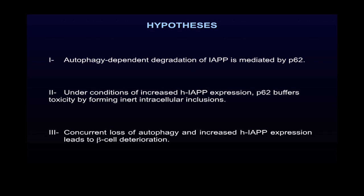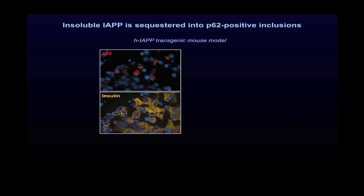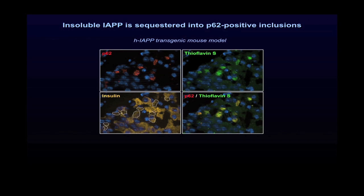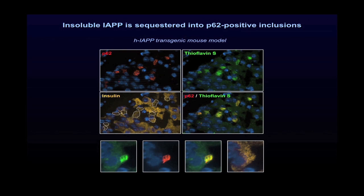We then investigated the role of P62 under increased expression of human IAPP and hypothesized that P62 buffers toxicity by forming inert intracellular inclusions. We previously reported that beta cells of human IAPP transgenic mice contain large cytoplasmic P62-positive inclusions, stained here in red. We thus investigated whether these inclusions could contain insoluble forms of IAPP. Since insoluble IAPP may form fibrils, we used the dye Thioflavin-S for staining, and we found that P62 inclusions were positive for Thioflavin-S in green. This data suggests that IAPP sequestered within these P62 inclusions is indeed organized into fibrils, as shown here by high magnifications.